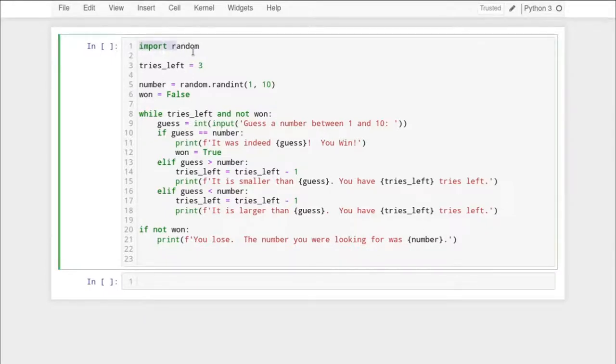It's just a basic guessing game like you would make for a little beginner project. We're going to import the random library here. We're going to set up a variable called tries left, set it to three, create a random number from one to ten, and we have a flag value here called won that is set to false.